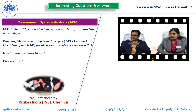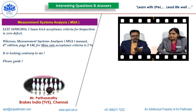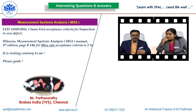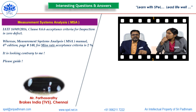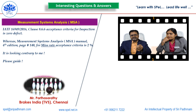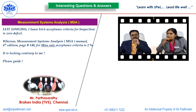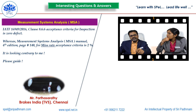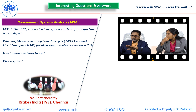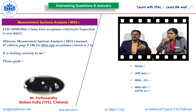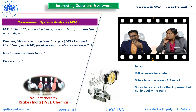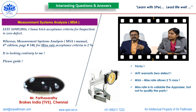Excellent — linking two different standards together. IATF 16949:2016 clause 8.6.6 calls for inspection results resulting in zero defect, whereas MSA fourth edition page 140 deliberately lists the miss rate acceptance criteria as 2%. Contrary? No contradiction at all. The situation is tricky, but IATF warrants zero defect — no doubt. MSA allows 2% miss rate maximum — no doubt.